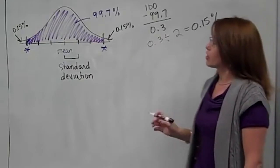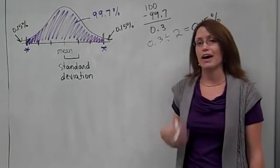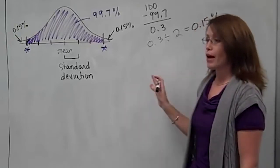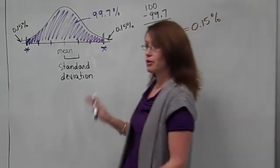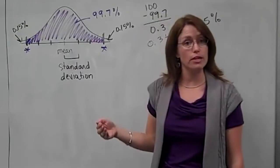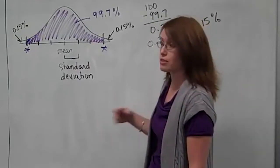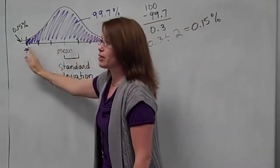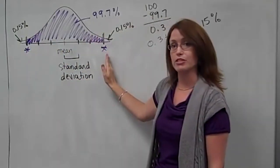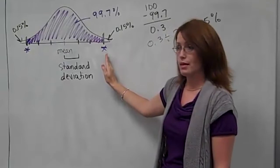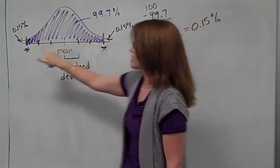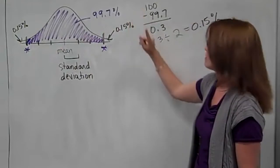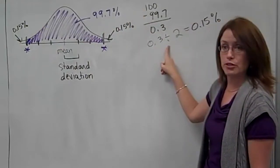One of your goals for this section is to identify how much you have in certain sections. Right now we know one part of the empirical rule, which is a set of three numbers to help you with standard deviations. One number is 99.7%, and that covers three standard deviations below and three above the mean. You can figure out the tail end sections by subtracting from 100 — because that's the total — and cutting it in half because it's symmetric.